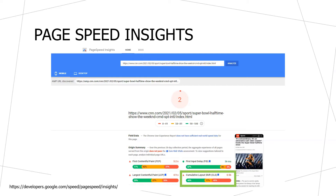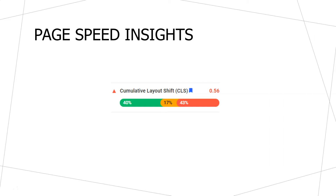To find Cumulative Layout Shift in PageSpeed Insights, begin by putting in your website's URL. Once the report loads on either mobile or desktop, you can see your Cumulative Layout Shift score — in this website's case, it's 0.56. Along with the overall CLS number, we can also see a distribution graph. This graph tells us the different experiences people had who visited the website. We can see that 40% of people saw very little or almost no layout shifting, 17% saw a little bit, and 43% saw quite a bit. The 0.56 represents the 75th percentile — that's what Google is aiming for, wanting the majority of visitors to experience little to no shifting.